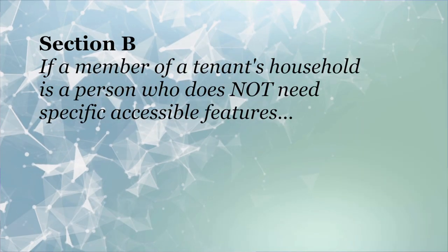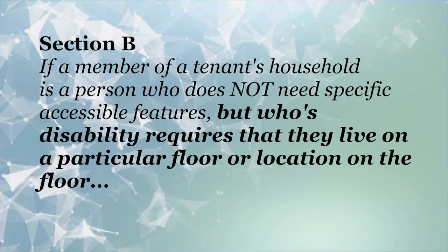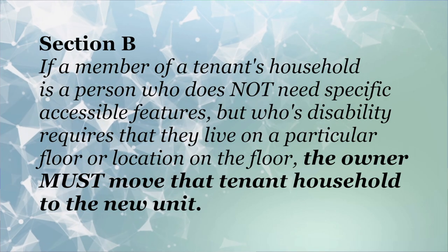Our next tip is in the same paragraph — Paragraph B. It says if a member of a tenant's household is a person who does not need specific accessible features like a roll-in shower, but whose disability requires that they live on a particular floor or location on the floor, the owner must move that tenant household to the new unit. If such a unit is not available, the owner should assign the tenant to the next available unit that meets the needs of the tenant. This accommodation must be based on the tenant's disability-related need for the particular unit or floor or location on the floor, and not just based on the tenant's personal preference. So you need a third-party verification.